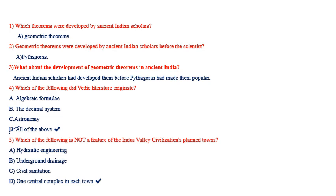Which of the following is not a feature of Indus Valley civilizations' planned towns? Options: A) Hydraulic engineering, B) Underground drainage, C) Civil sanitation, D) One central complex in each town. One central complex in each town is not a feature of Indus Valley civilization, so the answer is D.